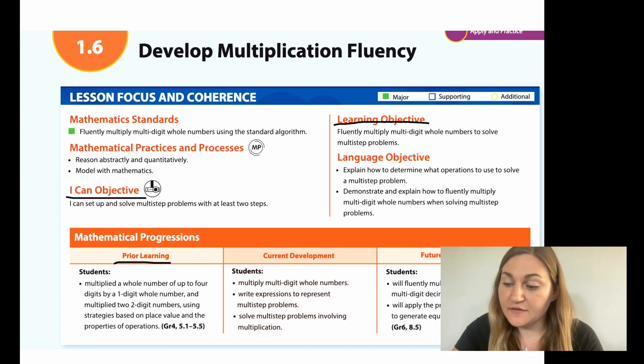Prior learning is that in fourth grade students multiplied a whole number of up to four digits by a one digit whole number and multiplied two digit numbers using strategies based on place value and the properties of operations.